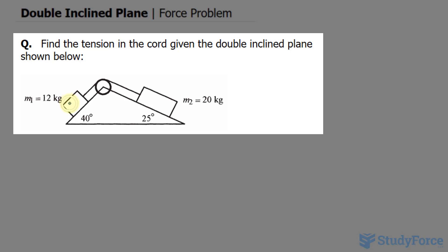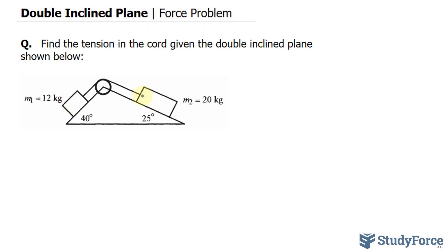So we have two masses, this one being lighter than that one, and they're both connected by this chord. We want to find out the tension that is being exerted on this chord. To do this, we have to do several different calculations.